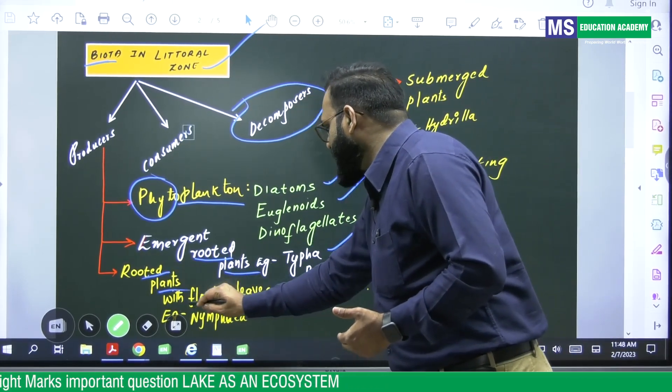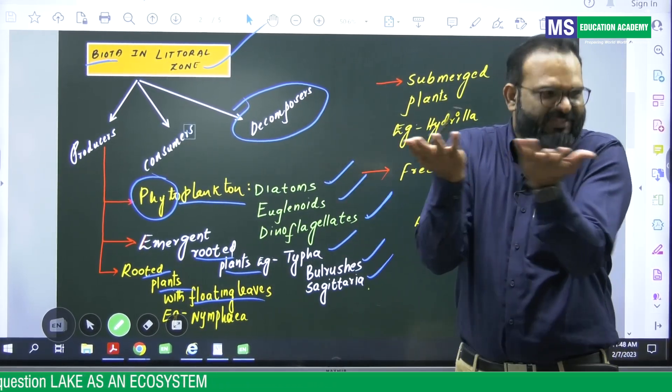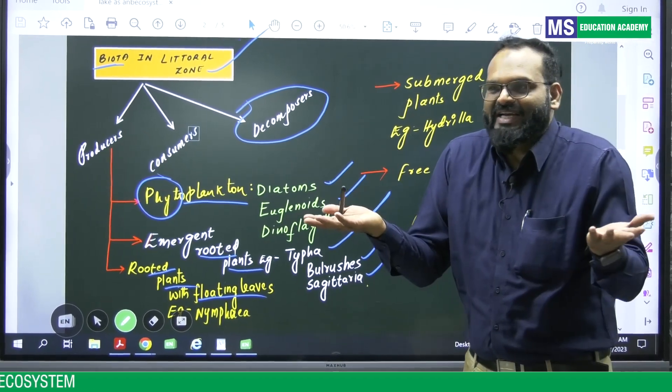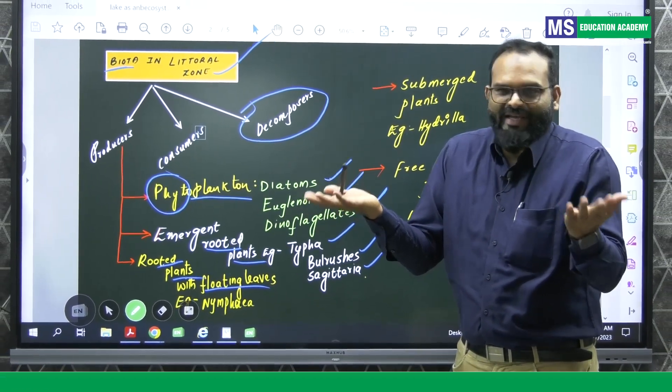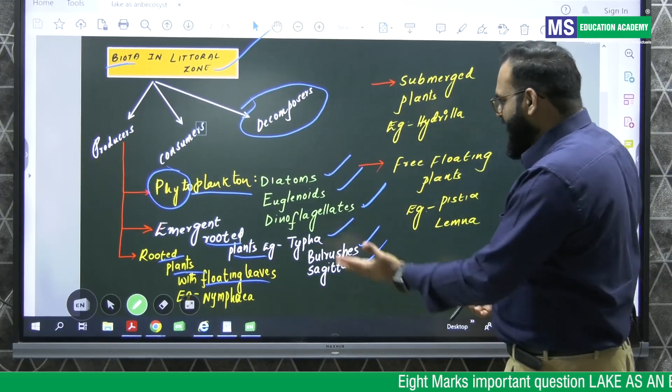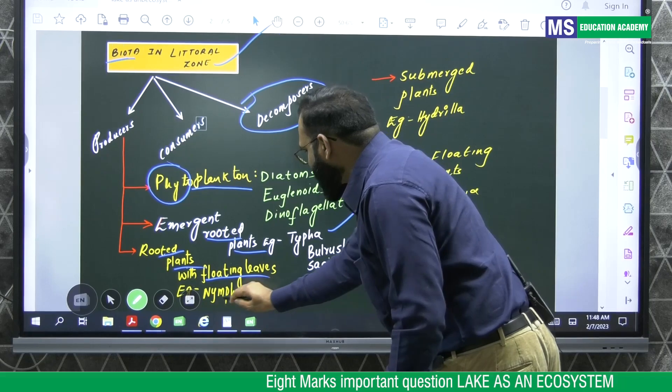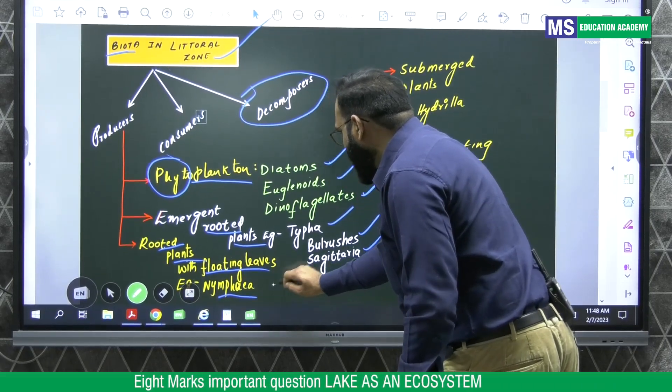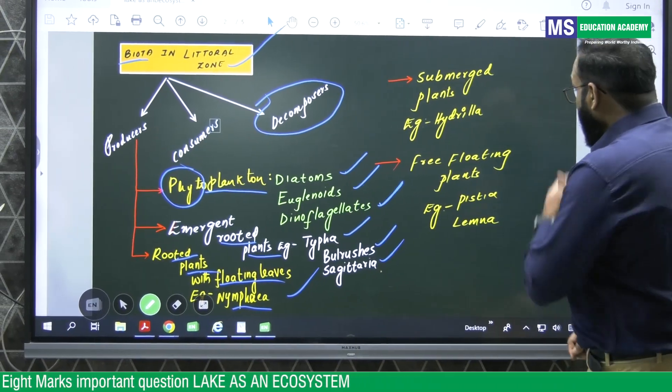When it comes to rooted plants with floating leaves, you might have seen in the stagnated water, waterlogged areas, big leaves, Nymphaea, Nelumbo, they are the examples. Rooted plants with free-floating leaves, example, Nelumbo.